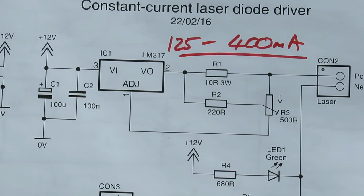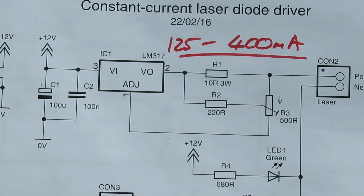Hope that was interesting. 317s are great for adjustable current sources. Thanks for watching.